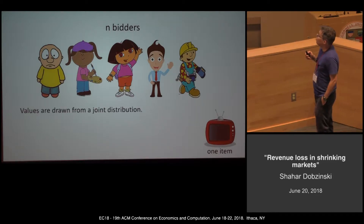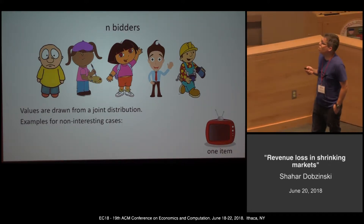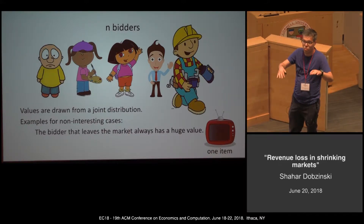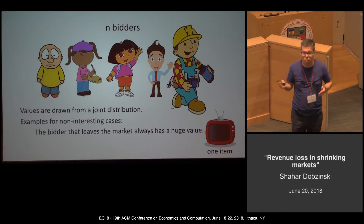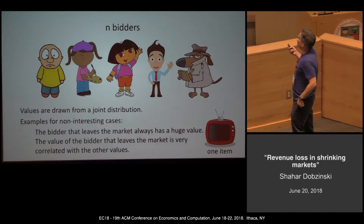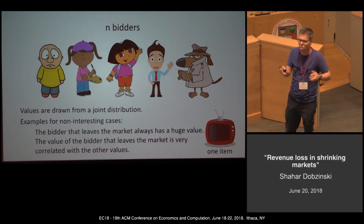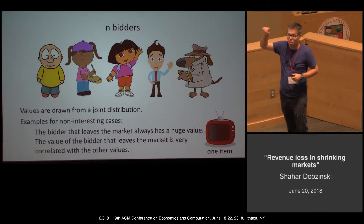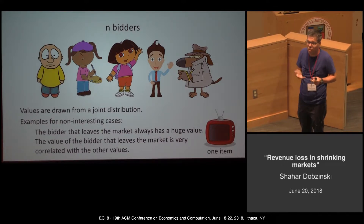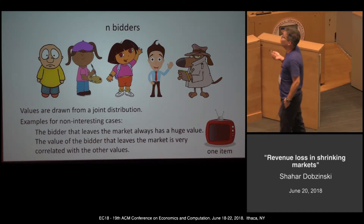Now let's go to the other extreme and assume the values are drawn from some joint distribution. Here are some uninteresting easy cases: one bidder has a huge value — say one million — and all others have values of approximately one. If this bidder leaves, you can't extract much revenue. Another uninteresting case is if the leaving bidder's value is highly correlated with others, so losing him means losing all that information.